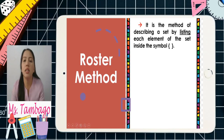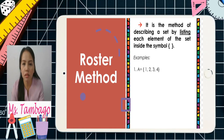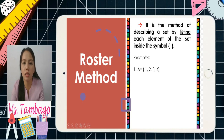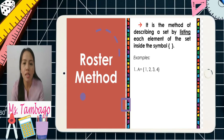For example, number one, we have Set A with the following elements: one, two, three, four. In the roster method, we write down each element one by one inside the braces. That is an example of a roster method.